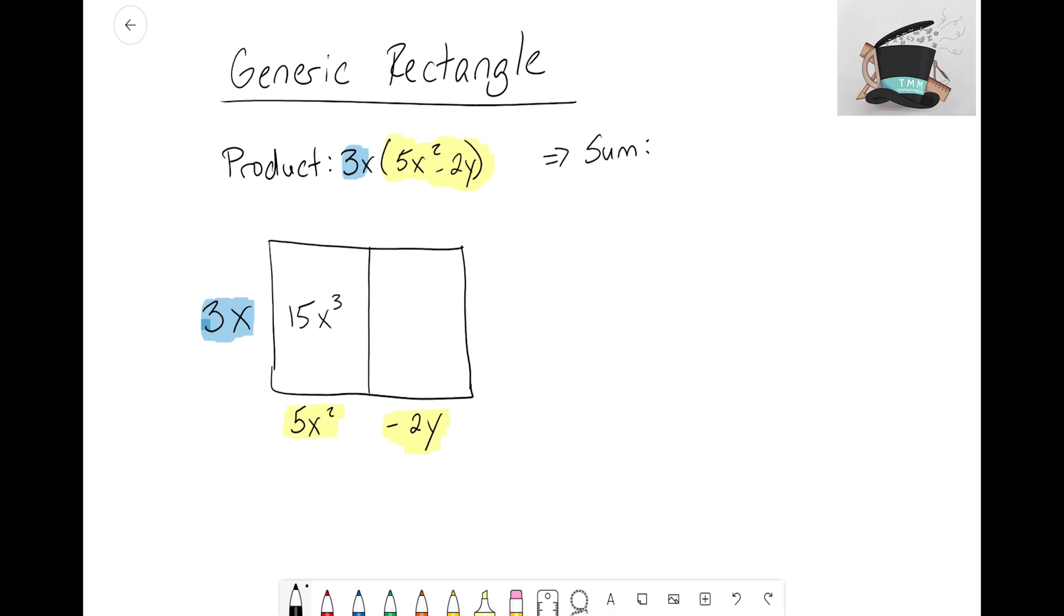Hopefully you're starting to realize why we use the generic rectangle instead of algebra tiles—we don't even have an algebra tile for x³. That's why we start this transition. As problems increase in difficulty, algebra tiles lose their usefulness; we can't really use them past a certain point.